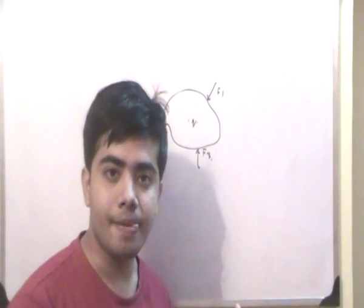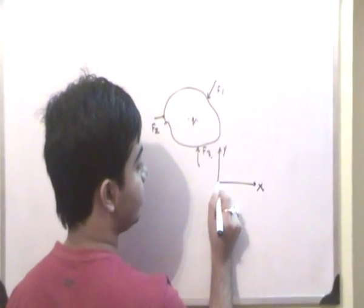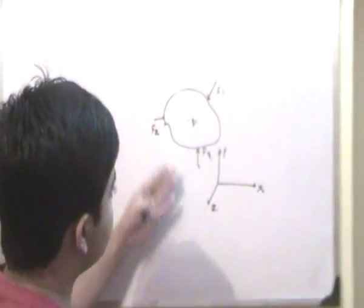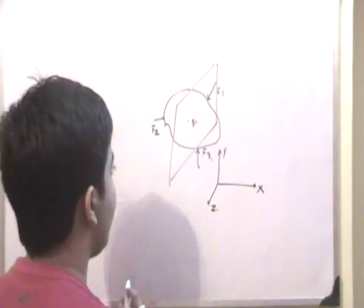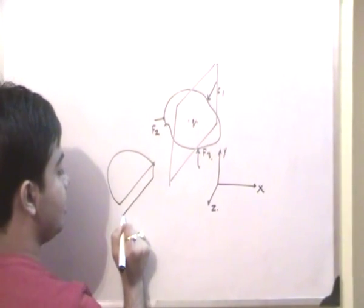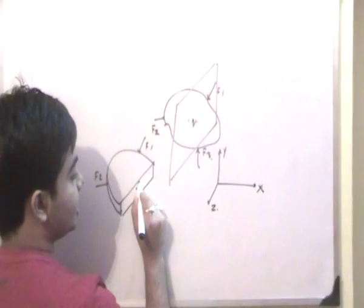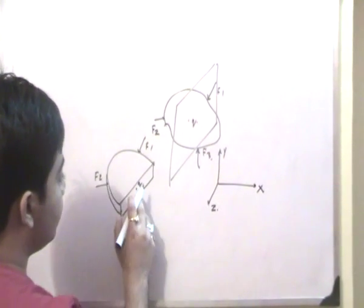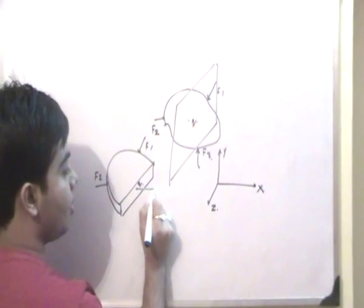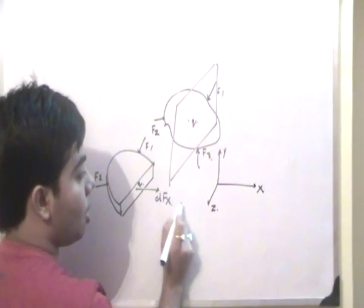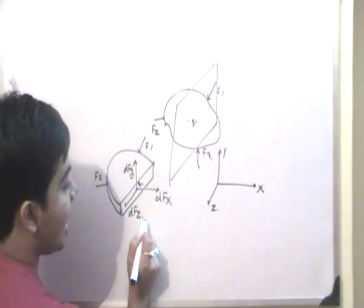Let us suppose we have three axes X, Y, and Z. If we cut a plane perpendicular to the X axis, the body is divided into two halves. With F1, F2, and point Q on this plane, there will be forces acting about this plane: dFx acting along the X axis, dFy acting along the Y axis, and dFz acting along the Z axis.